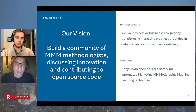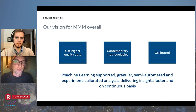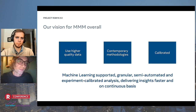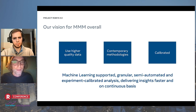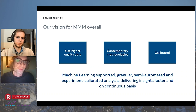We are really interested in building a community of MMM methodologists — people we could interact with, discuss innovation, and contribute to the open source. Robin itself is a manifestation of our overall Facebook vision about MMM, bringing it into tangible form. We foresee the evolution of MMM to become machine learning supported, very granular, able to give tactical as well as strategic marketing recommendations, being semi-automated with analyst oversight, calibrated with experiments or ground truth, and delivering insights on a faster, continuous basis.